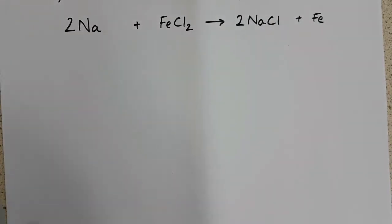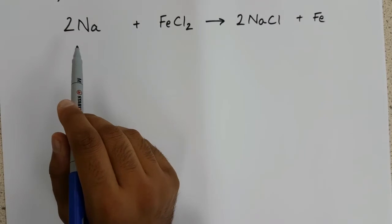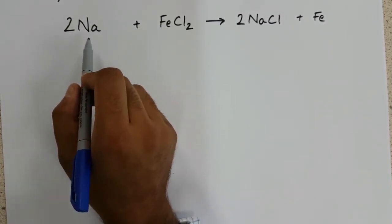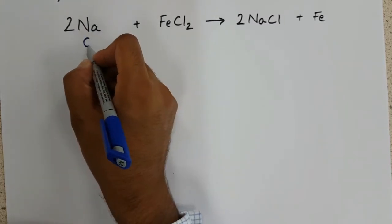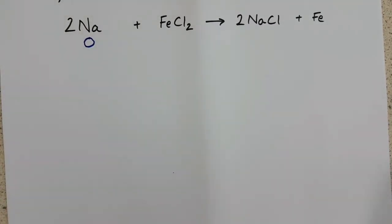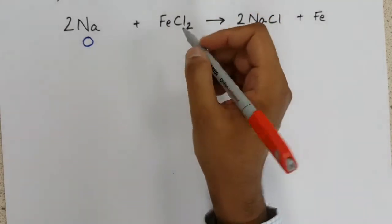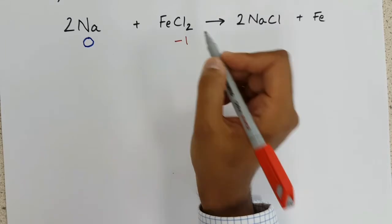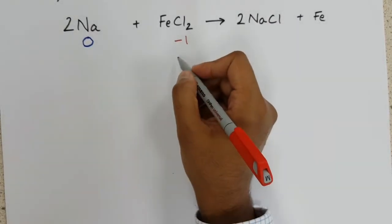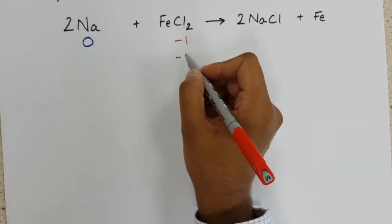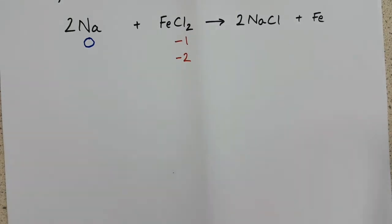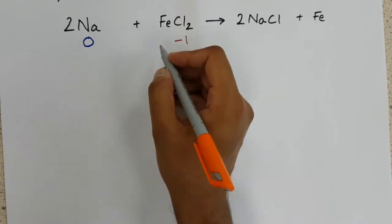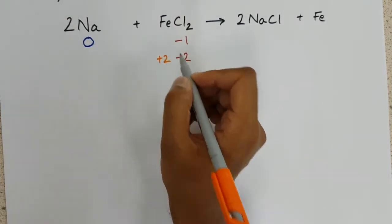Going back to basics, let's start off by adding on oxidation states. Sodium is by itself, it's uncombined, therefore it has an oxidation number of 0. Chlorine, which is in group 7, has a negative charge, minus 1, which there are 2 of, which makes it minus 2. Iron, which is combined with chlorine, must have an oxidation number of plus 2.